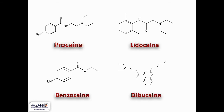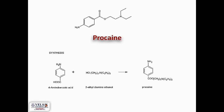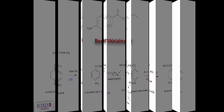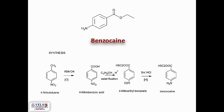Let us see the synthesis of a few local anesthetics, starting with procaine. Procaine is synthesized from 4-aminobenzoic acid on treatment with 2-diethylaminoethanol, which leads to the synthesis of procaine. Next comes lidocaine: 2,6-xylidine on treatment with chloroacetyl chloride, on condensation, gives lidocaine. For benzocaine: 4-nitrotoluene on potassium permanganate gives 4-nitrobenzoic acid, which on esterification forms 4-nitroethylbenzoate, which on reduction forms benzocaine.